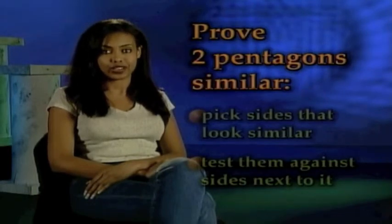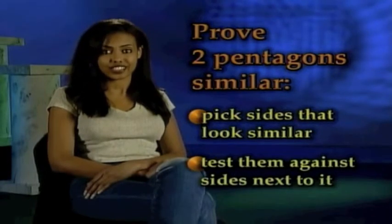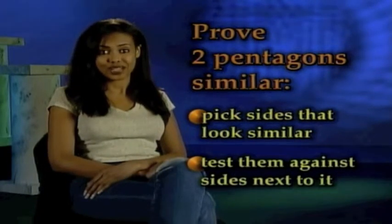Remember what we did with corresponding parts when we talked about CPCTC earlier? All you use is common sense. Let's say you're trying to prove two pentagons similar. Pick sides that look similar and test them against the sides next to it. Then everything else will fall into place.